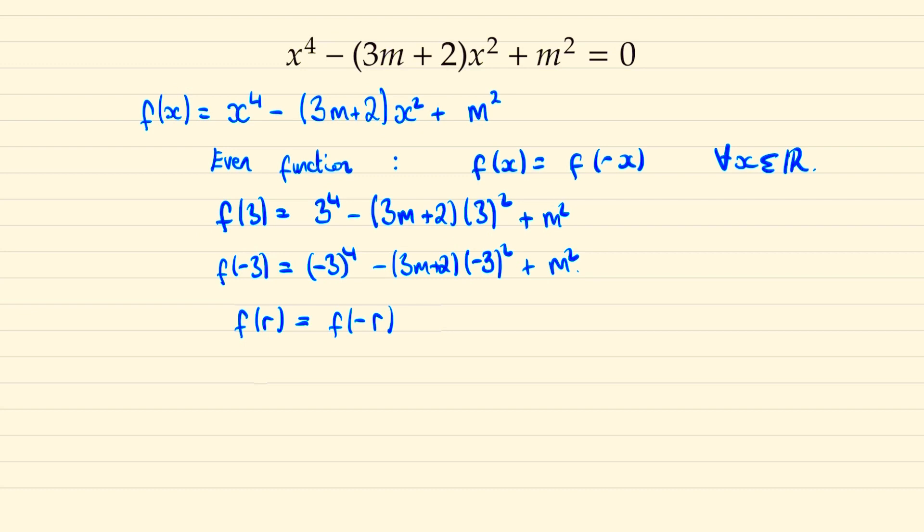And given that we're looking for roots such that they form an arithmetic progression we have another root at f of r plus d where d is some difference and f of minus r minus d. And so we can denote our roots in the progression minus r minus d, minus r, r and r plus d.